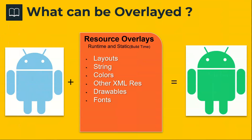So what can be overlaid using the RRO technique? RRO can technically overlay all the resource files like layouts, strings, colors, and other XML resource files. It can also overlay drawables and fonts. By doing this, you could dynamically change the look and feel of an application or a system UI component. In this simple example, you can see that a blue Android is changed into a green Android by using resource overlays.